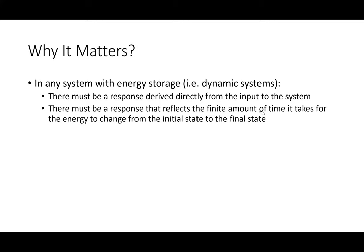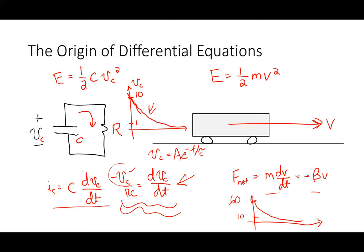Anytime I have these systems, there are two parts of my response. One that's derived directly from the input to the system, and one that reflects this finite amount of time that it takes for the energy to change from its initial state to its final state. In the example of this capacitor charged to 10 volts, do I have both of those responses or just one? Basically what I get is this natural decay. What it's doing is representing the fact that the energy stored in that capacitor takes time to leave.